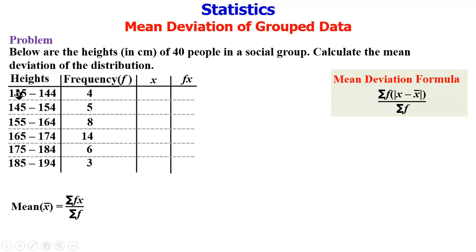And we are going to get x from the class interval - this is the lower limit and the upper limit. We sum them up and divide by 2. 135 plus 144 divided by 2 gives 139.5. 145 plus 154 divided by 2 gives 149.5. 155 plus 164 divided by 2 gives 159.5.